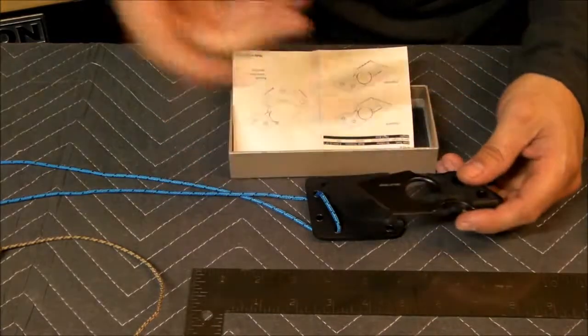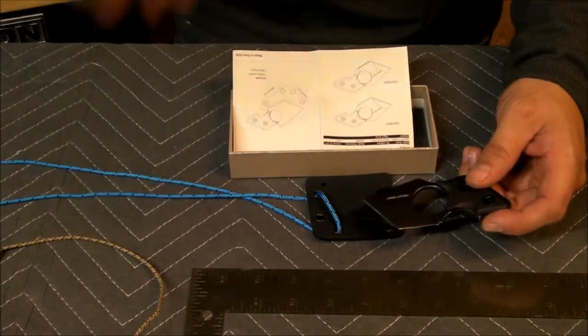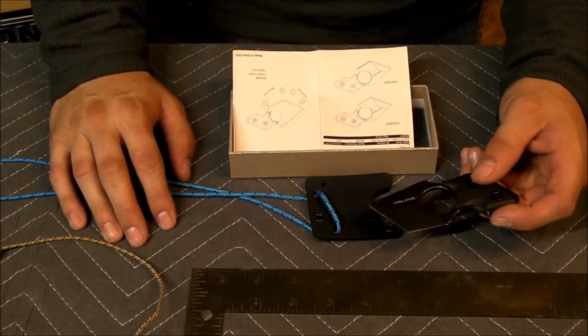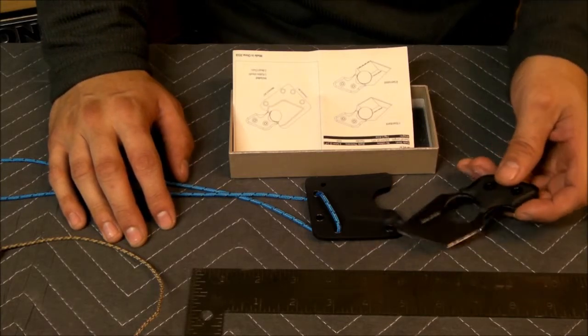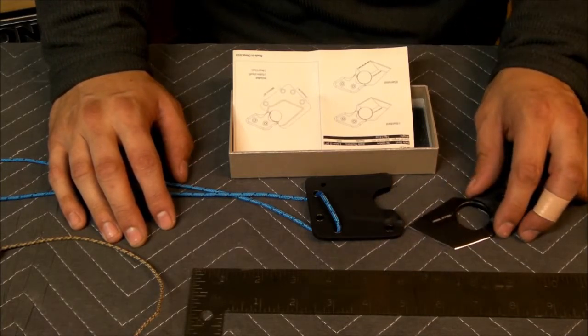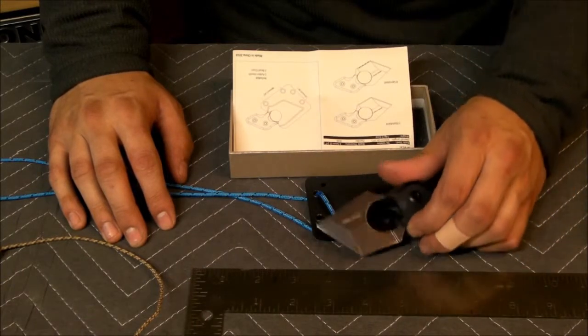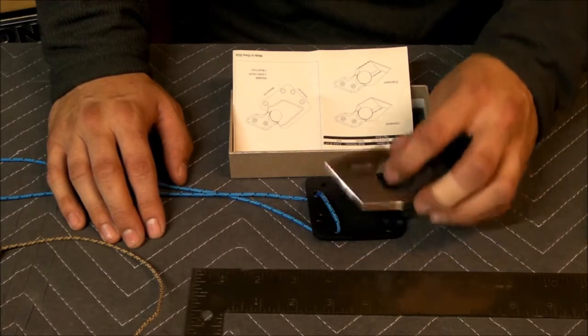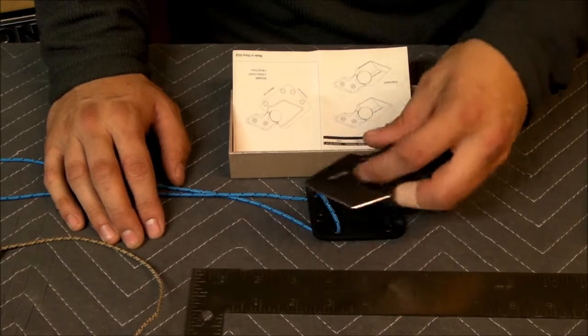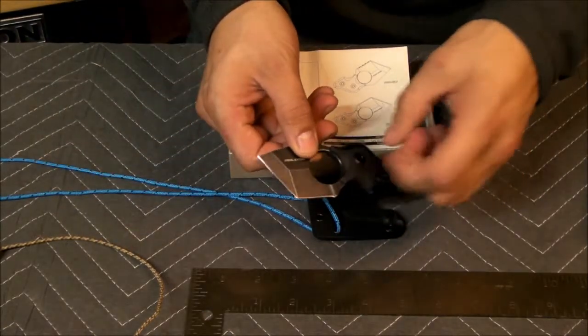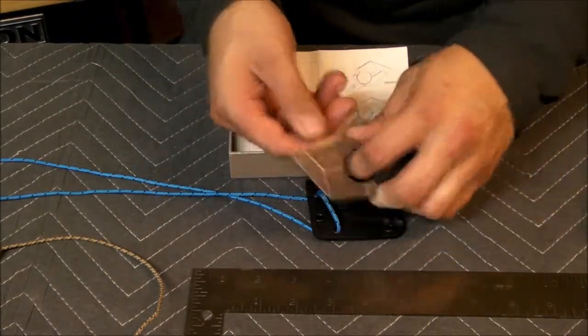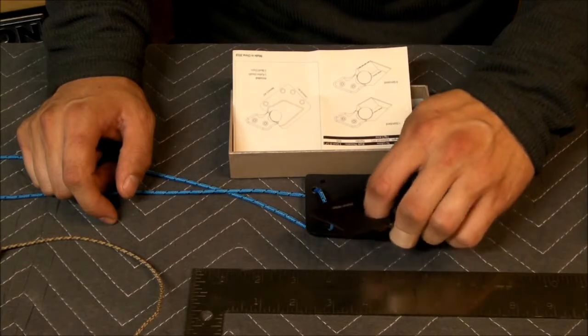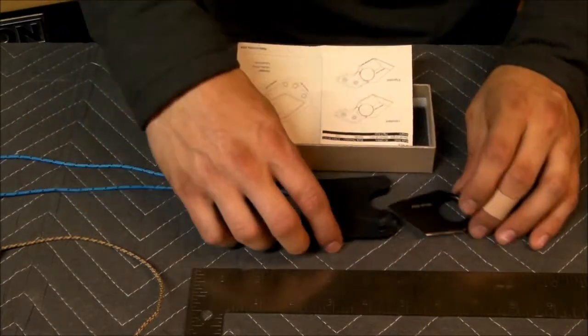I went with the black stone wash finish rather than the other finishes. They've got two other finishes. One is just regular stone wash, and then the other is kind of like bead blasted or brush polished, standard satin finish. But you do have three options of the blade finish, and I think they offer another color or two colors for the G10.